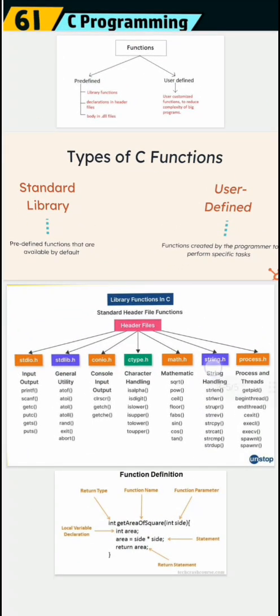Library functions in C use standard header files. For example, the header file stdio.h provides input and output functions such as printf, scanf, etc.